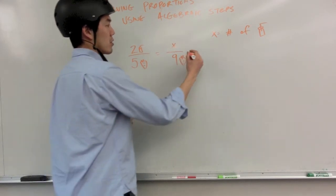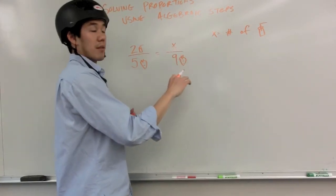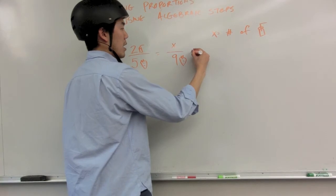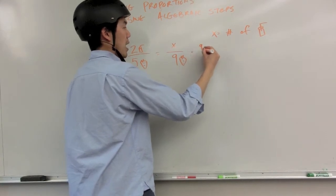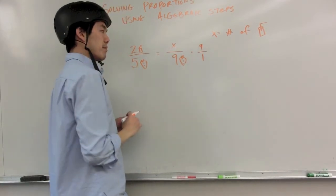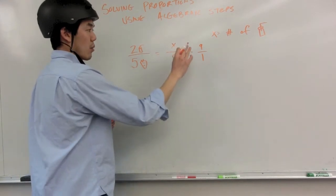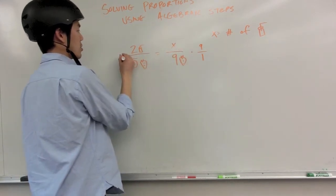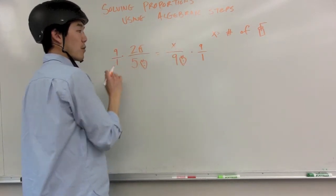The first thing I'm going to do is use the inverse property. I want to multiply this side by nine over one. And I know that what I do to one side I have to do to the other side, so I'm going to multiply this side by nine over one before I forget.